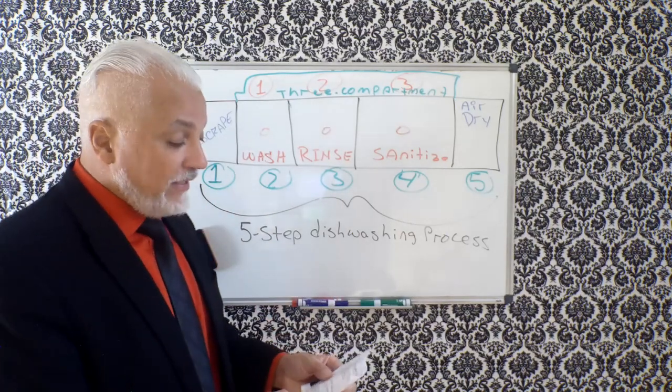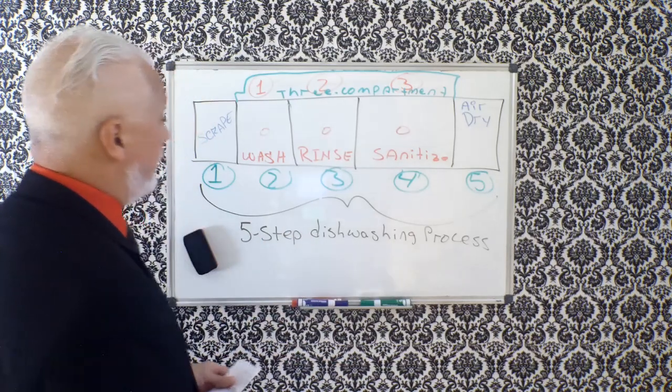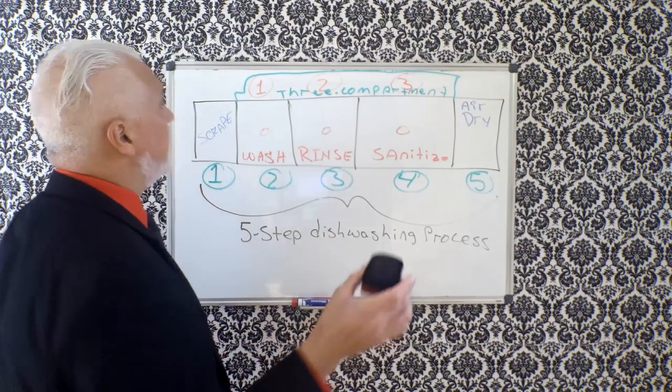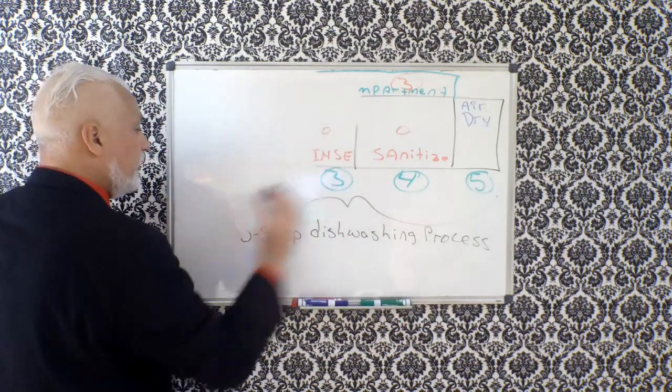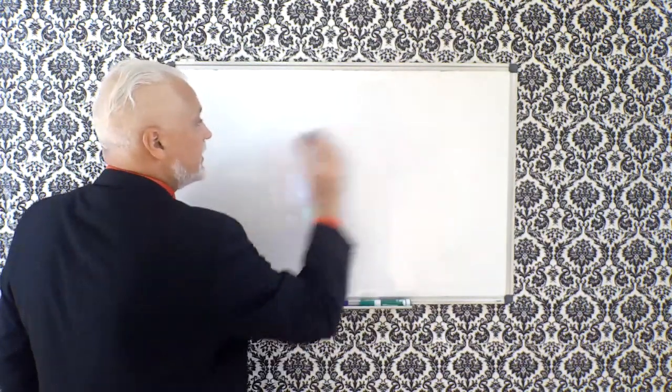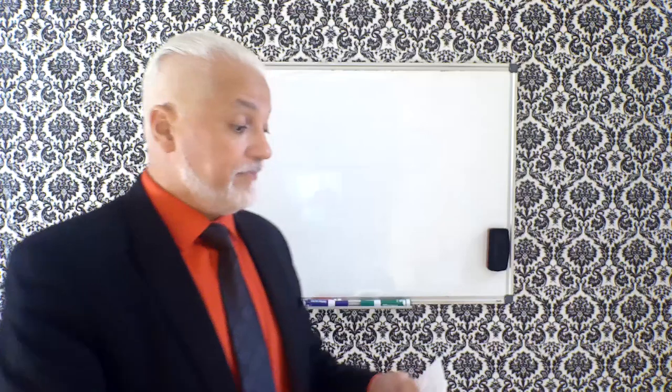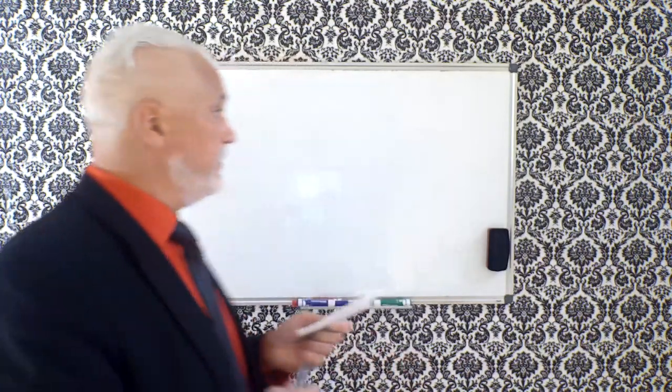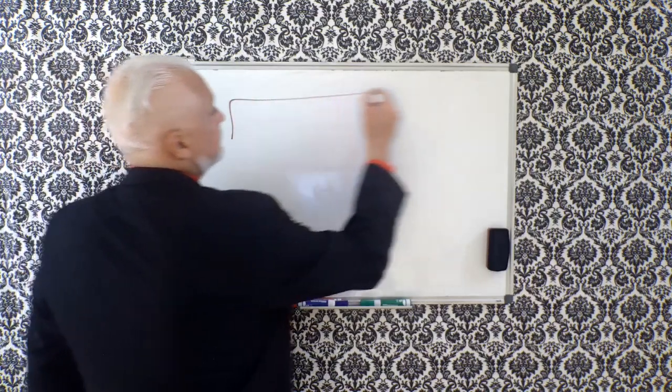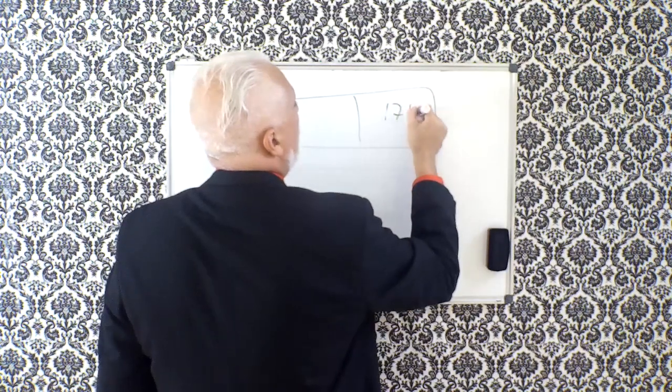Now what we have here is referred to as scrape, and at the end, for those of you that called it out, I heard you, it's air dry. So you have air dry and you have scrape. So what happened? I'm going to put the numbers down here because now it changed. So now this is actually step one, step two, three, four, and five. So technically this space here is your three compartment sink. All of this is your three compartment sink. But now this guy down here is actually now referred to as your five step dish washing process.